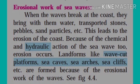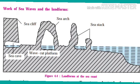Because of the continuous erosion by the sea waves on the coast, the landforms like wave cut platforms, sea caves, sea arches, and sea cliffs are formed because of the erosional work of the waves. You can see the landforms created by the erosional work of the sea waves in your textbook page number 36, figure number 4.4, showing how the landforms are created by the sea waves.